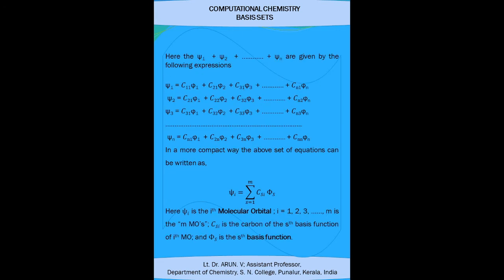Here psi_1, psi_2, and so on up to psi_n are given by the following individual expressions: psi_1 = c11·phi_1 + c21·phi_2 + c31·phi_3 + ... + cn1·phi_n. Similarly, psi_2 = c21·phi_1 + c22·phi_2 + c32·phi_3 + ... + cn2·phi_n. And psi_3 = c31·phi_1 + c32·phi_2 + c33·phi_3 + ... + cn3·phi_n. Similarly, psi_n = cn1·phi_1 + c2n·phi_2 + c3n·phi_3 + ... + cnn·phi_n.